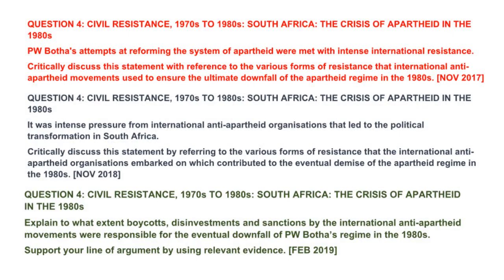Let us slow things down a little bit by looking at the questions more in depth. The first question was taken from the November 2017 question paper and it reads as follows: PW Botha's attempts at reforming the system of apartheid were met with intense international resistance. Critically discuss this statement with reference to the various forms of resistance that international anti-apartheid movements used to ensure the ultimate downfall of the apartheid regime in the 1980s.